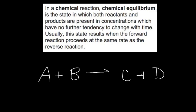Hello, gentlemen. Welcome to our video on the end of Chapter 6 called Chemical Equilibrium. Chemical Equilibrium is a state in which both reactants and products are present in concentrations which have no further tendency to change with time. So essentially, that's when a reaction has stopped.